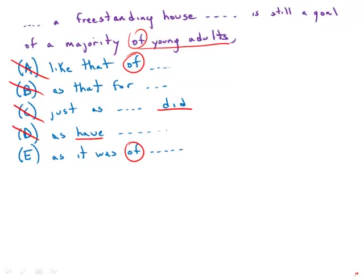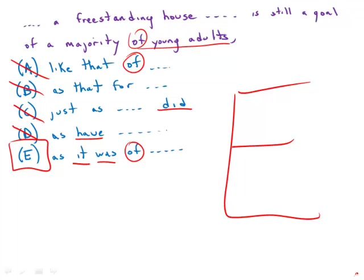So C and D are out and really the only one that has the perfect parallel structure is still a goal of a majority of young adults as it, the goal was, of an earlier generation. E is clear, direct, sleek, and absolutely perfect. E is by far the best answer choice.